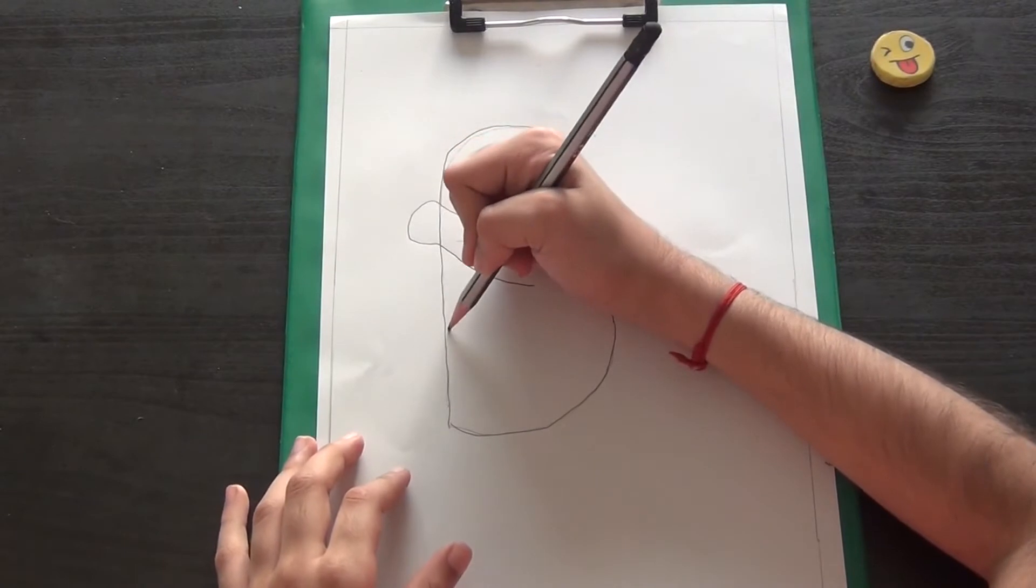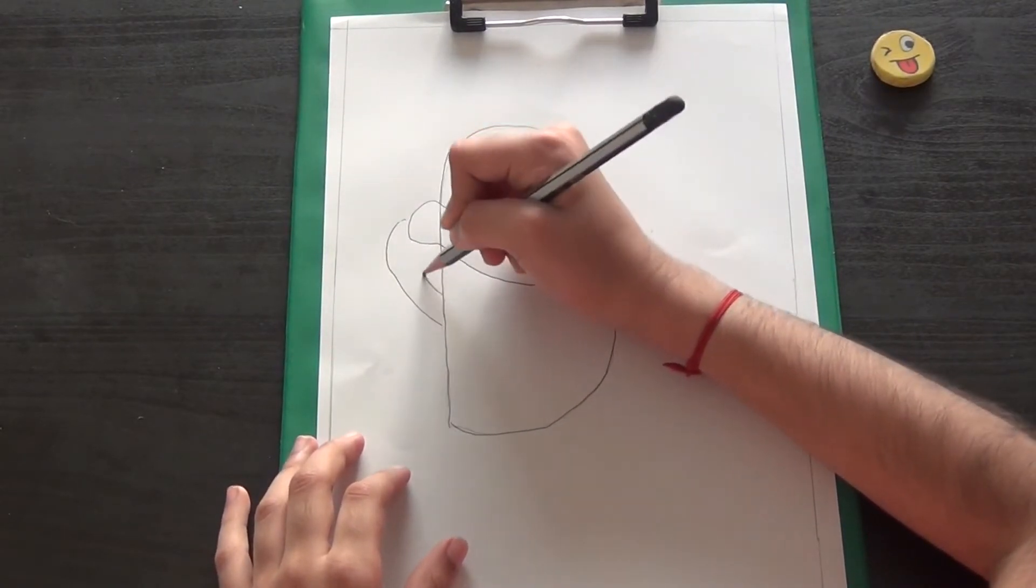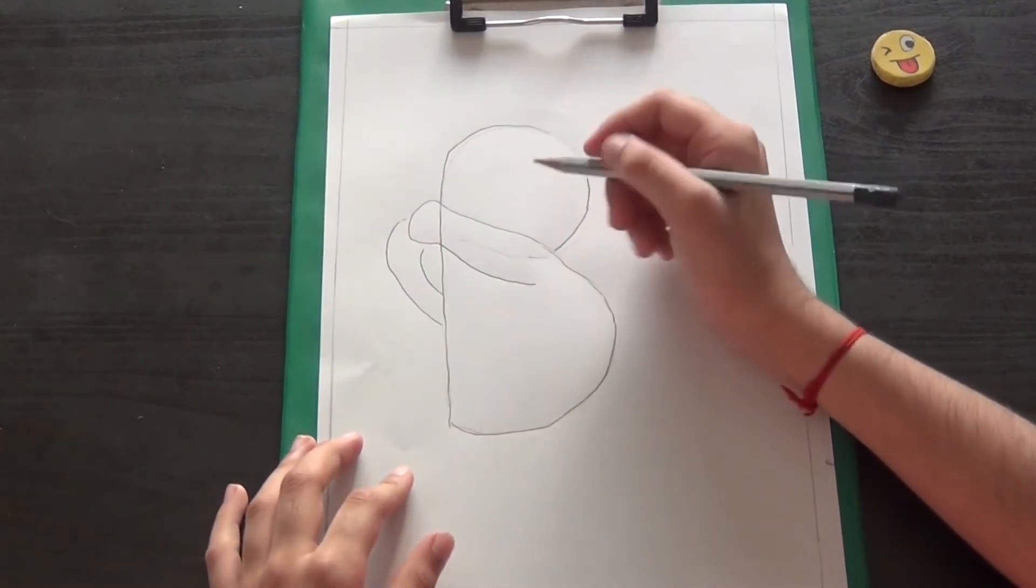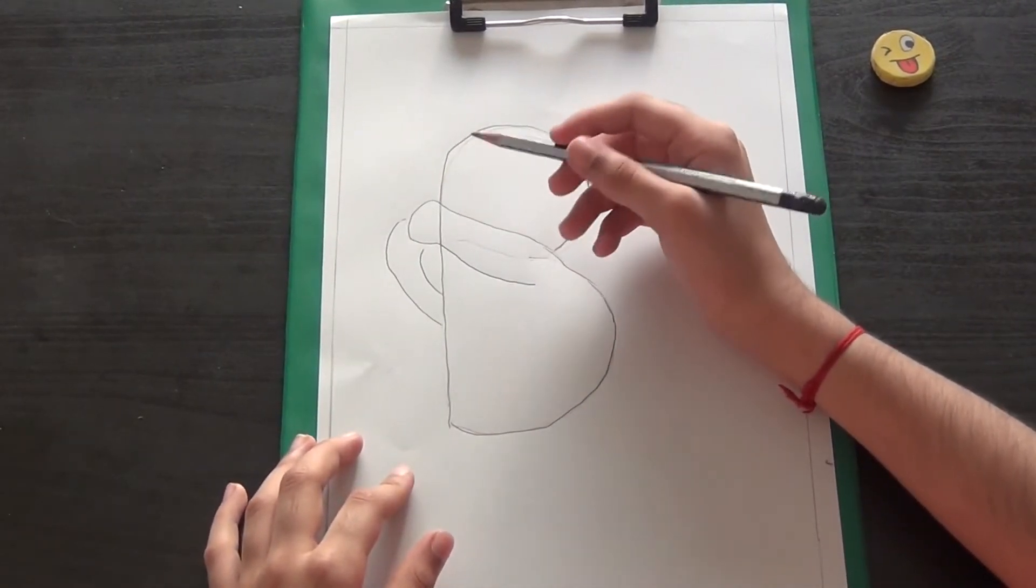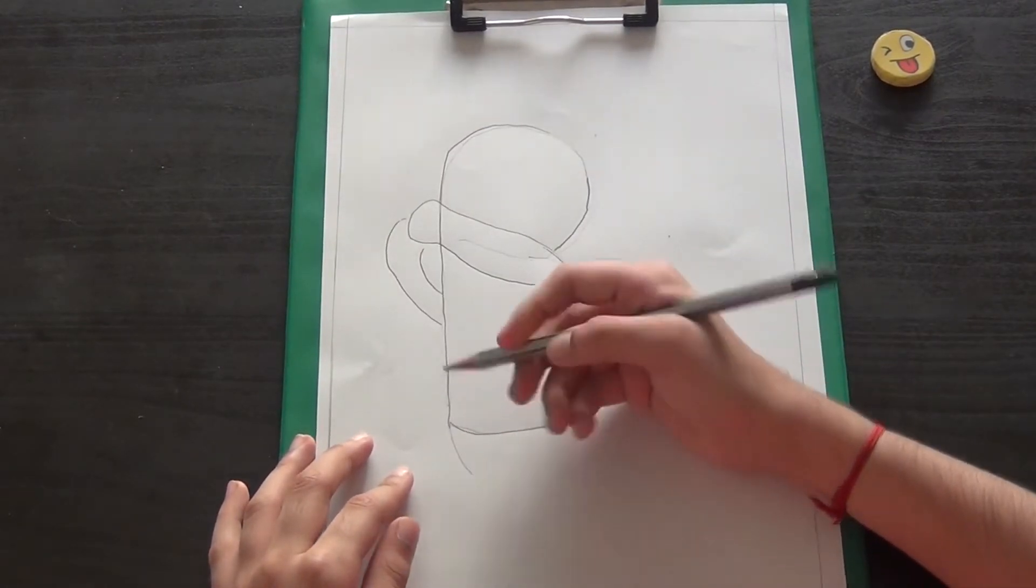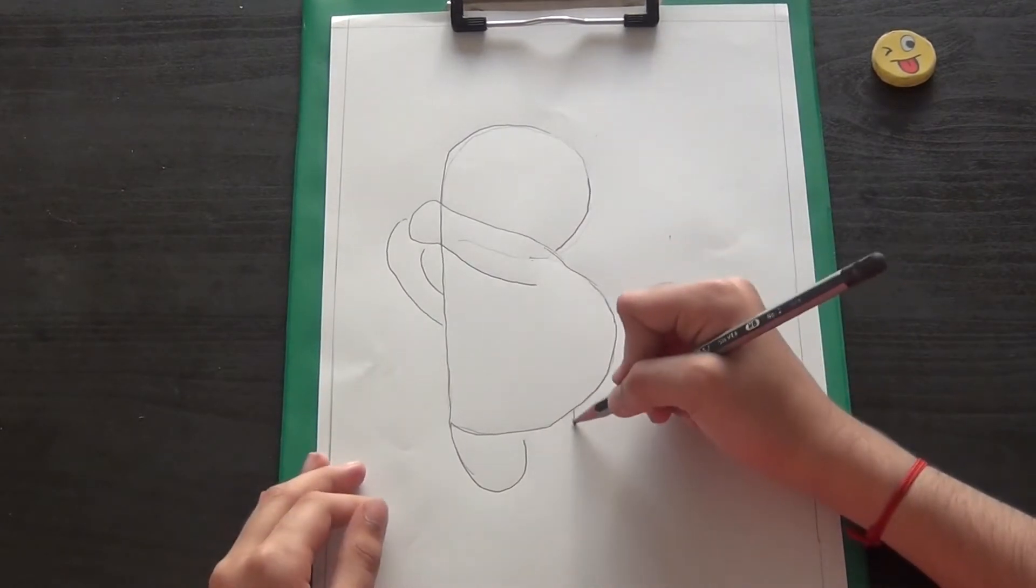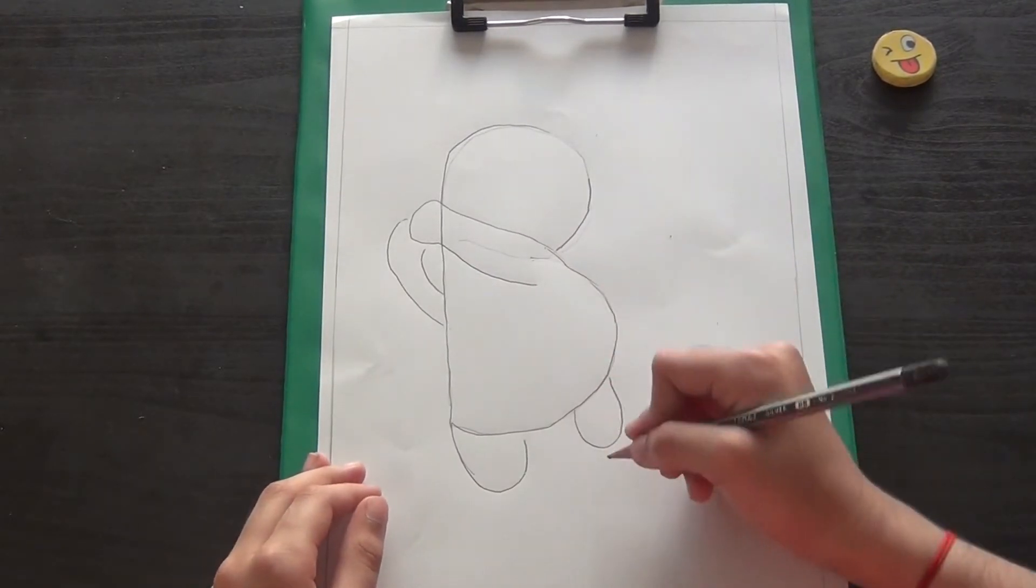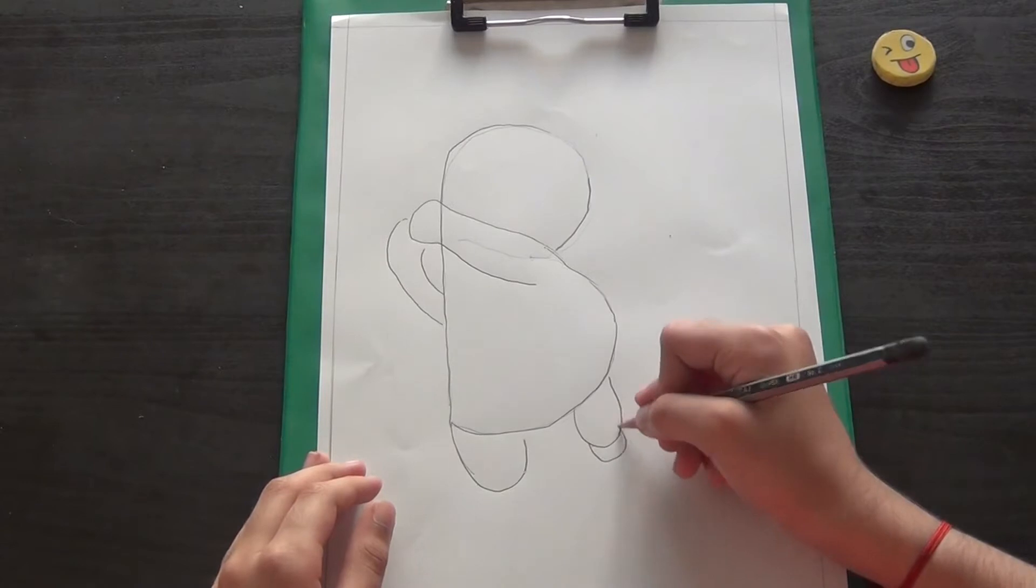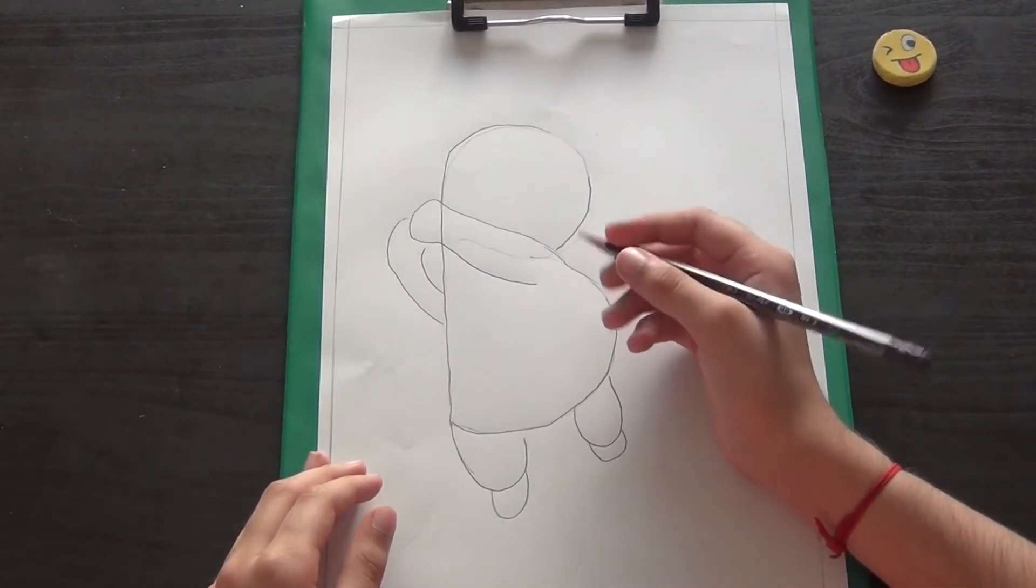And then here you start with the other hand, like this. From there you can start with the legs. You can go like this, and then tiny ones here as the foot.